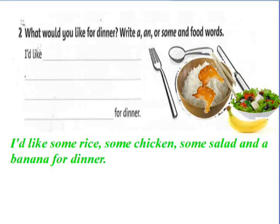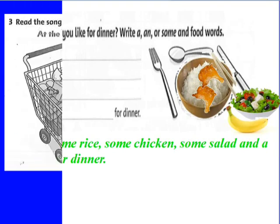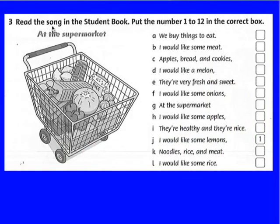Now the last exercise: Exercise 3. Read the song in the student book. Put the number 1 to 12 in the correct box — 'At the Supermarket'. Read the song again and number the items in order from 1 to 12. You can do this exercise at home.